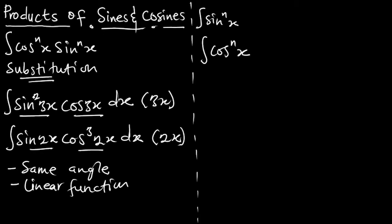So we have a linear function. As this is sine square 3x, this is cos 3x, so we can say cos raised to the power 1. Here, this is sine raised to the power 1. This is cos cube. So in the first episode or in this part 1, we are going to look at a situation where we have one of the trig functions raised to the power 1.